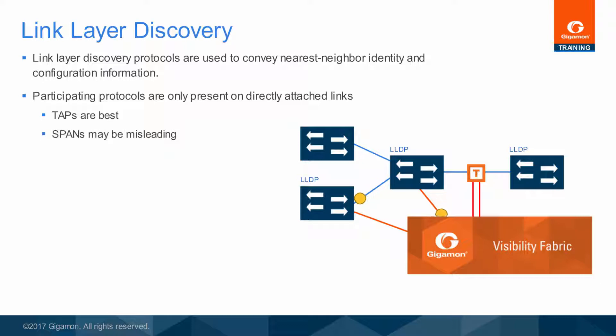Discovery can also be used with span ports, but information received from a span port may be misleading depending on how the span is configured. When a range of ports are included in the span session, different and conflicting LLDP and CDP information may be received. However, when the receiving switch is not configured for a particular discovery protocol, that type of packet is forwarded through like any other multicast packet.